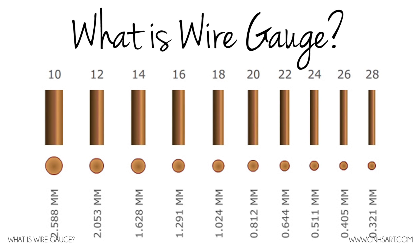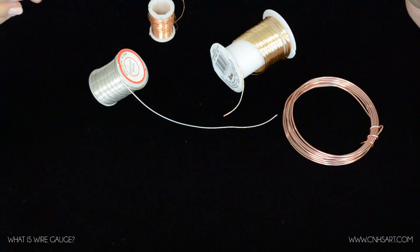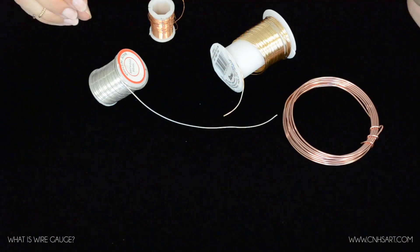Today I want to talk to you about the gauge of wire and the differences in sizes. So the number can be a little confusing because the smaller the number is, it actually refers to a larger sized wire, so a wire with a larger diameter.